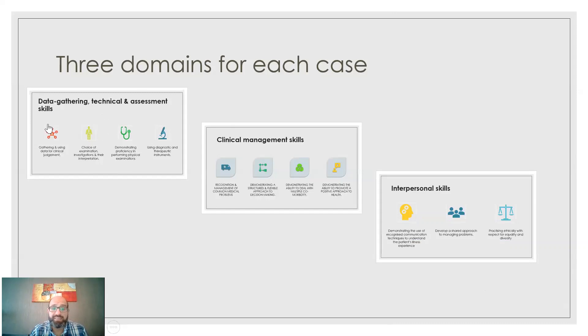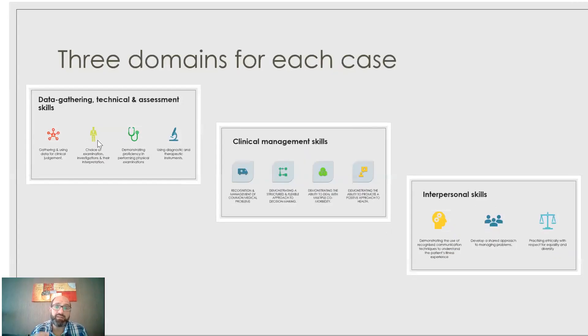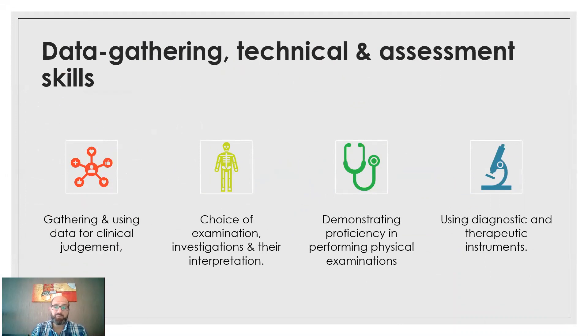The first category is data gathering, technical and assessment skills. The second is clinical management skills, and the third is interpersonal skills. Under data gathering and assessment skills, you put anything related to clinical reasoning and data gathering to reach clinical judgment, including choosing physical examination, which investigations to request, and interpreting results. This includes the performance of psychomotor skills, procedures, and using diagnostic and therapeutic instruments.